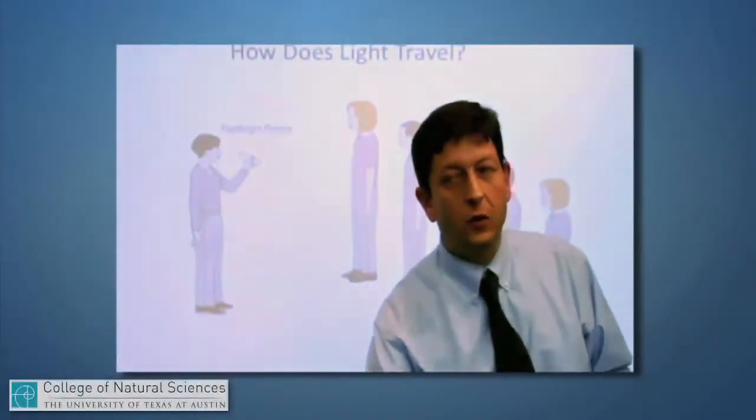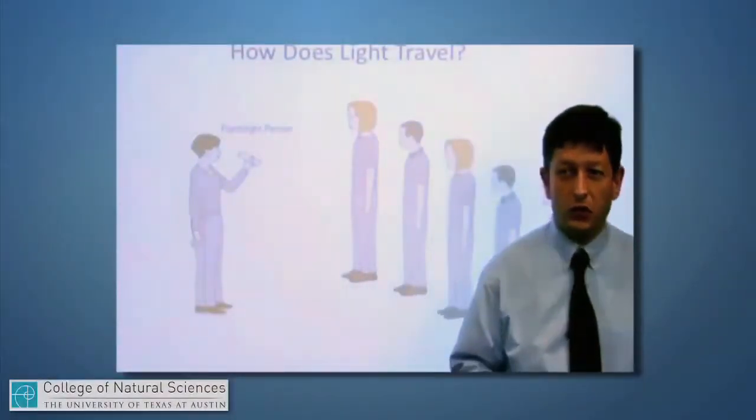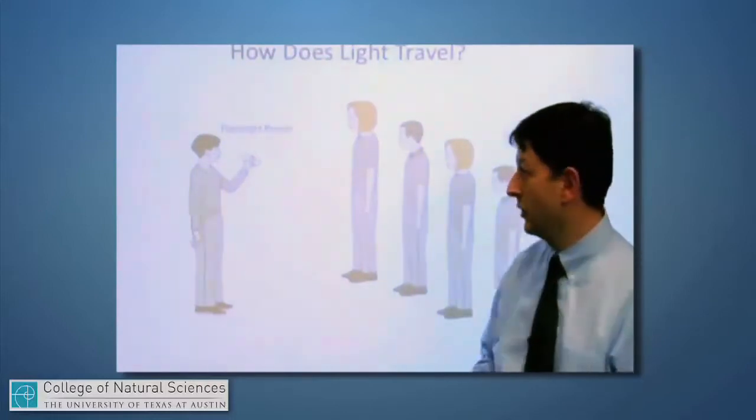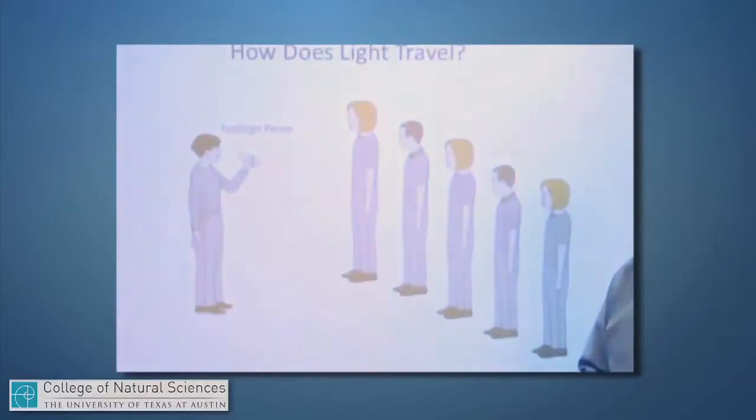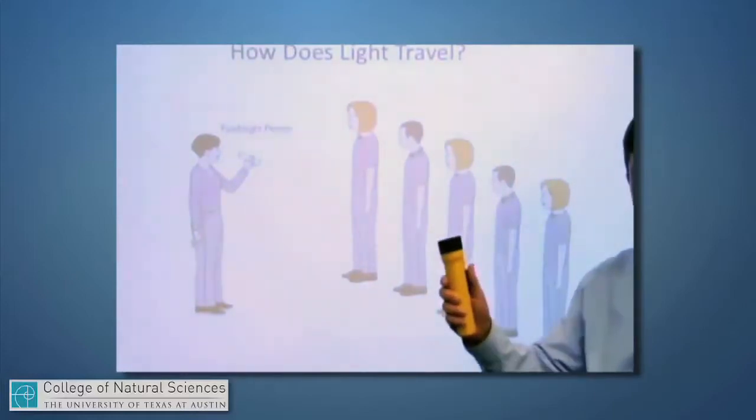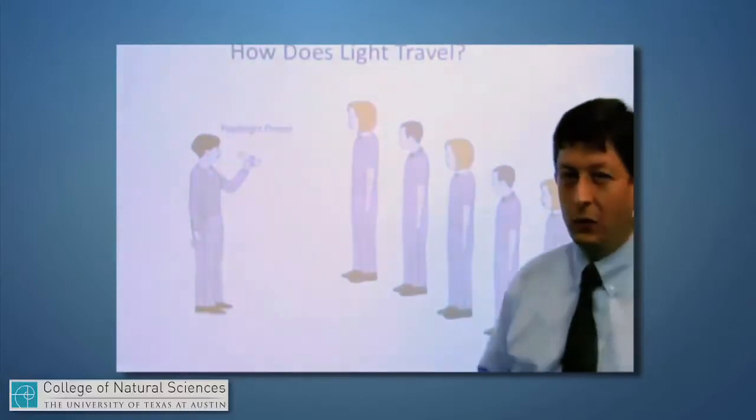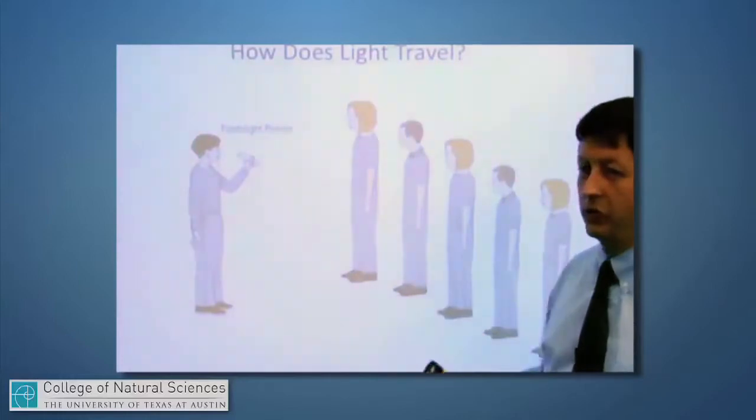The first thing that's important for us to know about light is that light largely travels in a straight line. If I imagine a group of your friends and yourself standing in a row like so, and one of you has a flashlight like this one, how would the light reach any one of these individuals in this picture?